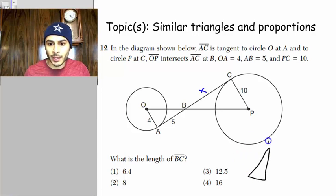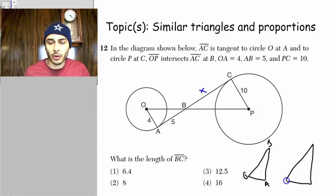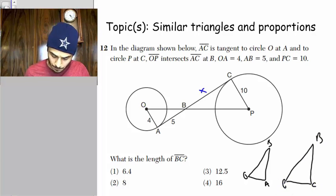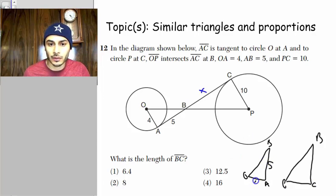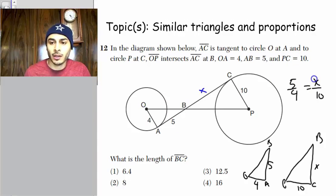This is triangle BAO. We want to orient them the same, so then this is going to be B and then CP. So then this is 5, and this is 4, and then BC is X, and then this is 10. So if you want X, you set up your proportion.